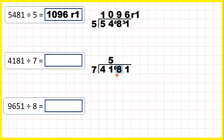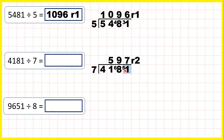Now 68 divided by 7 is 9, remainder 5, because 9 times 7 is 63, but then we need 5 more to get to 68. And 51 divided by 7 is 7, remainder 2, because 7 times 7 is 49, but then we need 2 more to get to 51. So our answer is 597, remainder 2.